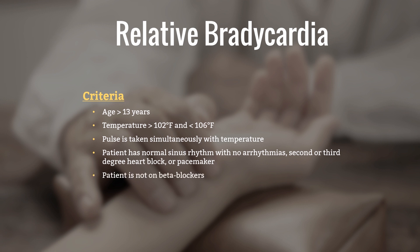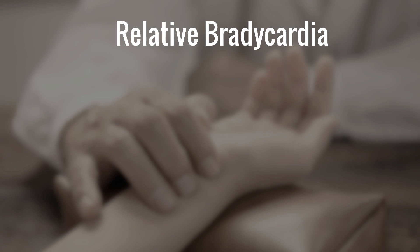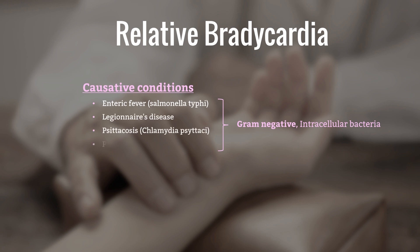The patient must not be taking beta blockers. Infections in which relative bradycardia is seen are usually those caused by gram-negative intracellular bacteria. These include enteric fever due to Salmonella typhi, Legionnaire's disease, Psittacosis caused by Chlamydia psittaci, and pneumonia caused by Chlamydia species.